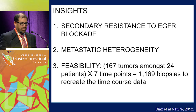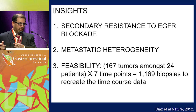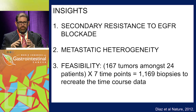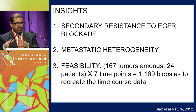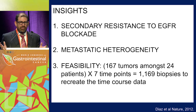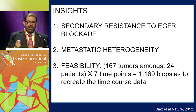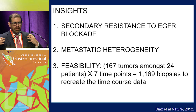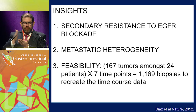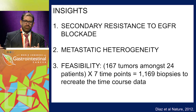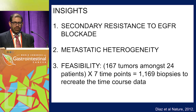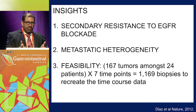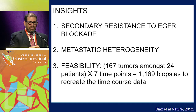The key insight from tracking resistance with circulating tumor DNA was that we could define the molecular basis of secondary resistance to EGFR blockade, and observe heterogeneity in how resistance developed. From a feasibility standpoint, these patients had on average 10 different metastases. The 7 blood draws we performed over time would have required over 1,100 different biopsies — not clinically feasible. The blood draw allowed us to pool information from the entire metastatic profile in a single draw and observe heterogeneity evolving.